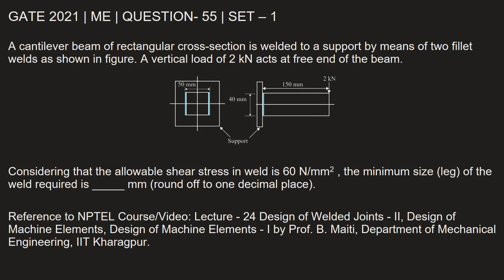A cantilever beam of rectangular cross-section is welded to a support by means of two fillet welds as shown in the figure. A vertical load of 2 kN acts at free end of the beam. Considering that the allowable shear stress in weld is 60 N per mm square, the minimum size or leg of the weld required is dash millimeters.